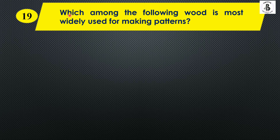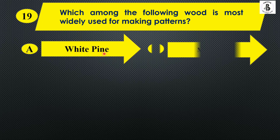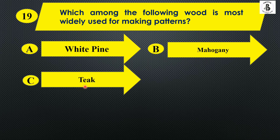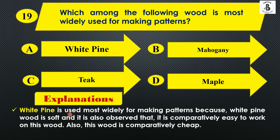Which among the following woods is most widely used for making patterns? Option A: white pine, Option B: mahogany, Option C: teak, and Option D: maple. White pine is used mostly for making patterns because it is soft wood and comparatively easy to work with. It is also comparatively cheaper than other wooden materials. So the right answer is Option A, white pine.